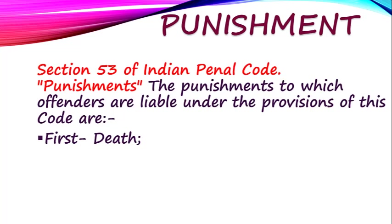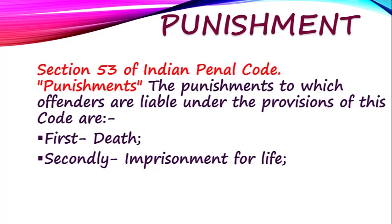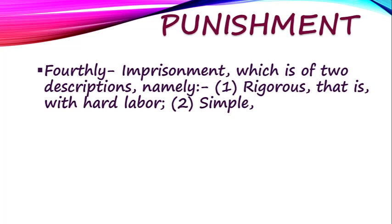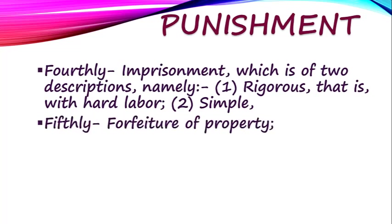The first type of punishment is death. Second is imprisonment for life. Fourth is imprisonment, which is of two descriptions: namely rigorous — with hard labour — and simple. Next is forfeiture of property. Forfeiture of property is also a way of punishment, and the last is fine. In total, under Sections 53 to 75, there are five types of punishment.